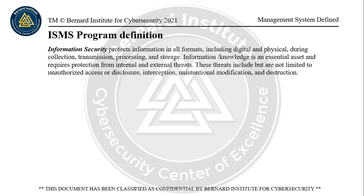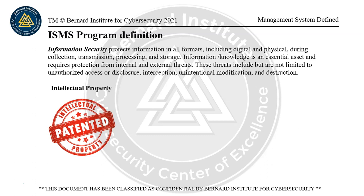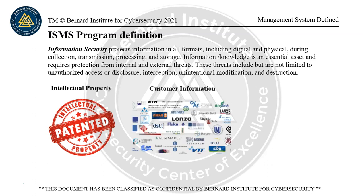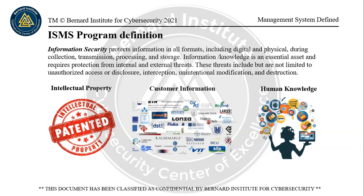These threats include, but are not limited to, unauthorized access, disclosure, interception, unintentional modification, and destruction. Different types of information assets include intellectual property, customer information, and knowledge that humans bring with them. To protect these, we can classify and conduct valuation of assets to determine their value. We can also create security standards and apply those to make sure information is encrypted. And we can provide handling procedures, training, and awareness to teach people how to identify and protect different types of information.